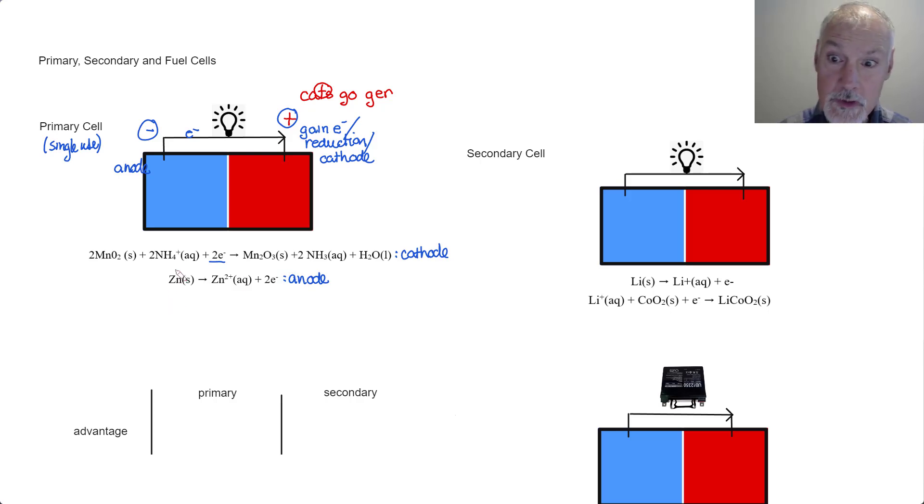Let's look at what the overall reaction would be in this cell. The first thing I have to do is ensure that the number of electrons lost and gained correspond to each other. And they do in this case. So they will essentially cancel out and we can add these together.